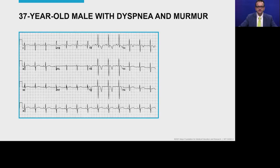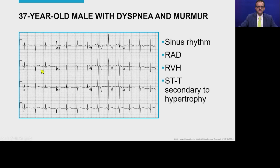We'll start off with an ECG of a 37-year-old male with dyspnea and a murmur. If you look at this ECG a little bit more carefully, the patient has sinus rhythm, right axis deviation, right ventricular hypertrophy, and some ST-T changes suggestive of hypertrophy — potentially right ventricular hypertrophy.